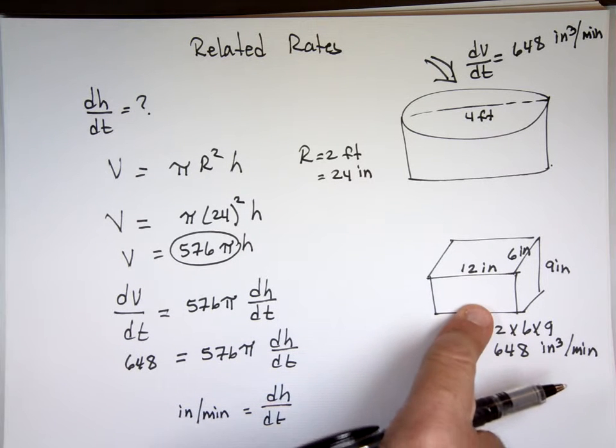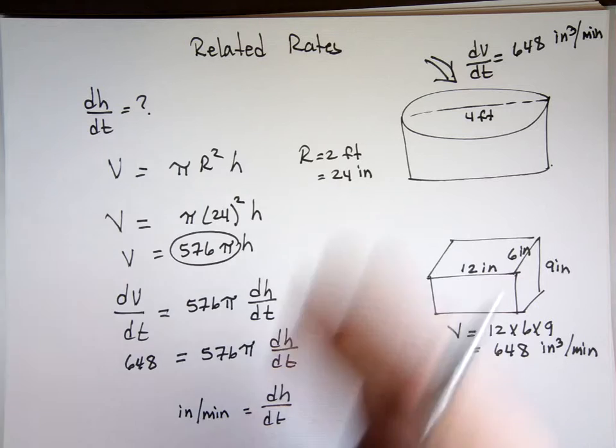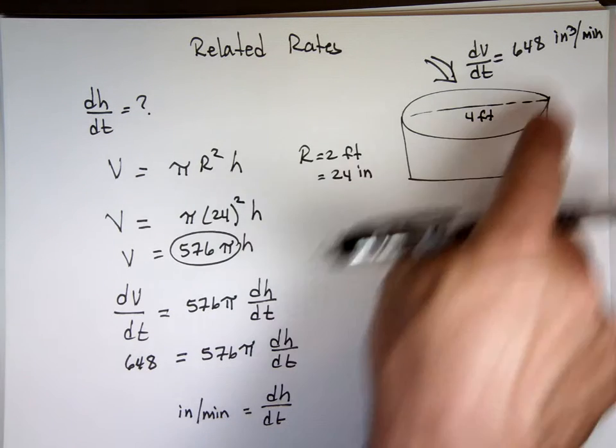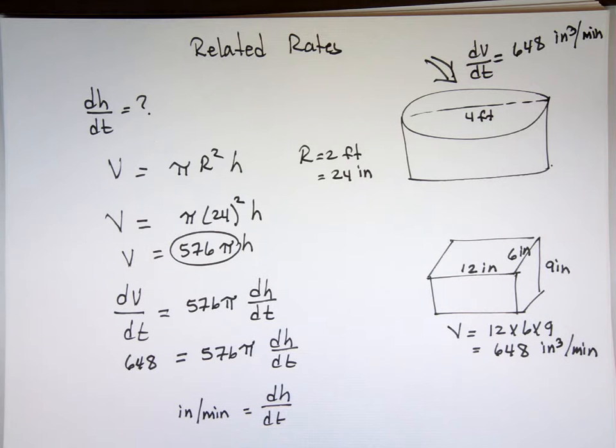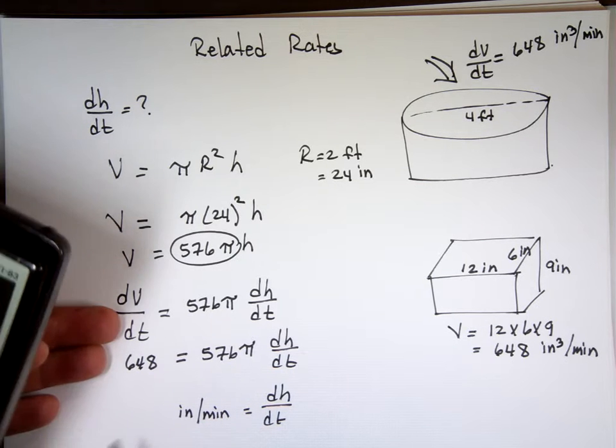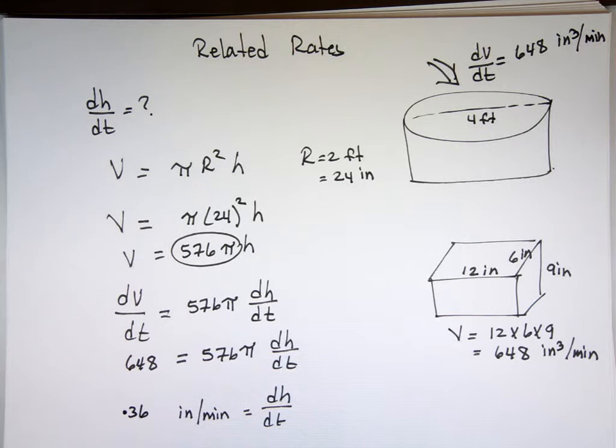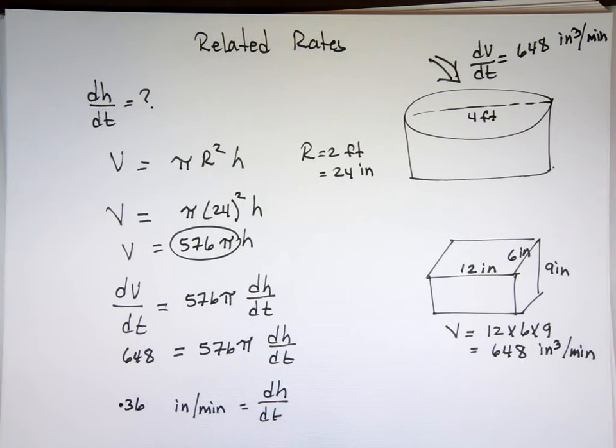This is in inches per minute. That's how fast it's rising. We dump one of these containers every minute. We wanna know how fast the height of that pool is rising. Again, small pool. Four feet long from end to end, kitty pool. 648 divided by parentheses, put them 576 pi. Close parentheses. At the rate of .36 inches per minute. That's the height.